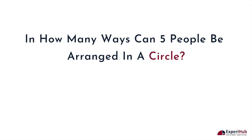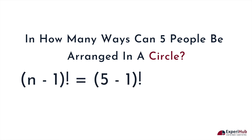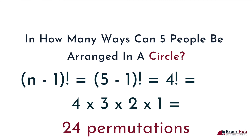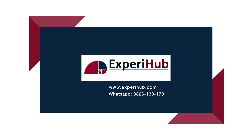Since there are five repeated arrangements, the number of ways they can sit in a circle can be calculated by solving (n−1)!, which is equal to four factorial. So there are 24 different permutations.